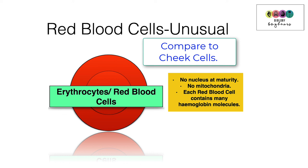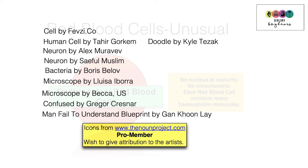Another common question is to compare red blood cells to cheek cells. A red blood cell, known as an erythrocyte, has no nucleus and no mitochondria at maturity — these have been expelled. Red blood cells also contain many haemoglobin molecules, whereas cheek cells do not. That was a basic run-through on cells. Remember to use your textbook and do exam papers and check the official marking schemes.